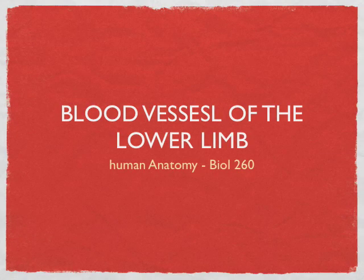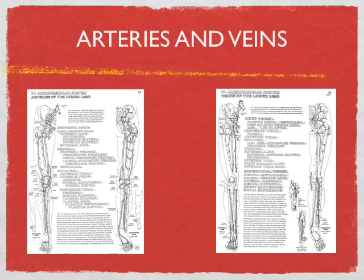Let's take up this topic of blood vessels in the lower limb. The handout you have in front of you is taken from the anatomy coloring book, and it's a nice, succinct outline of the major arteries and veins in the lower limb. Make sure you turn the page over both ways — one side says arteries and one side says veins. We need to learn all of these.